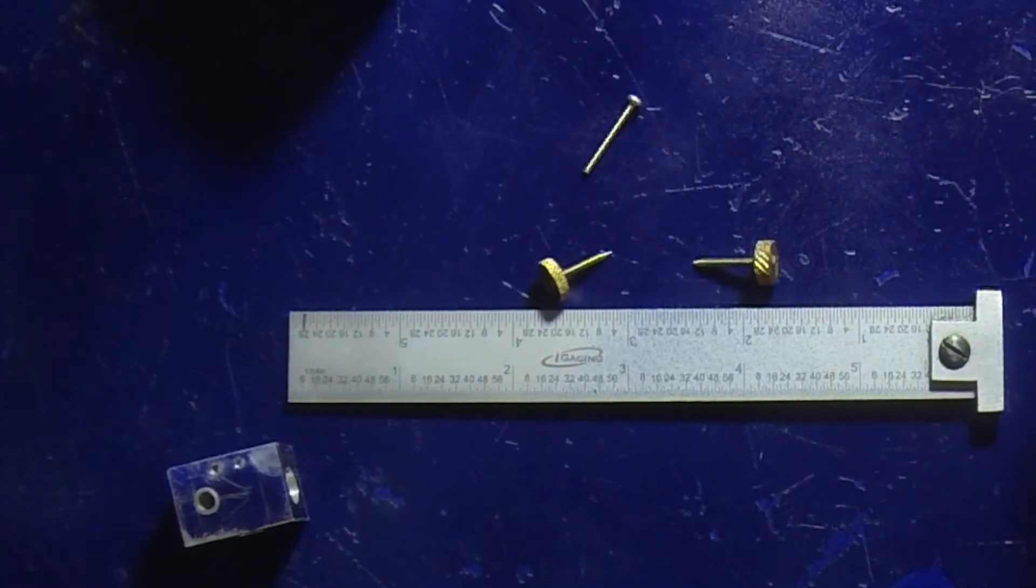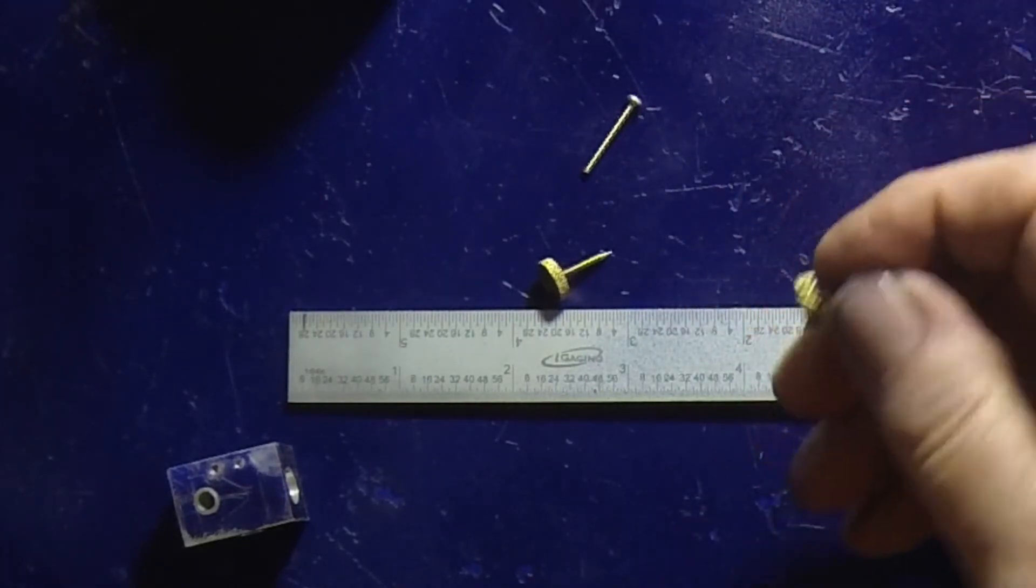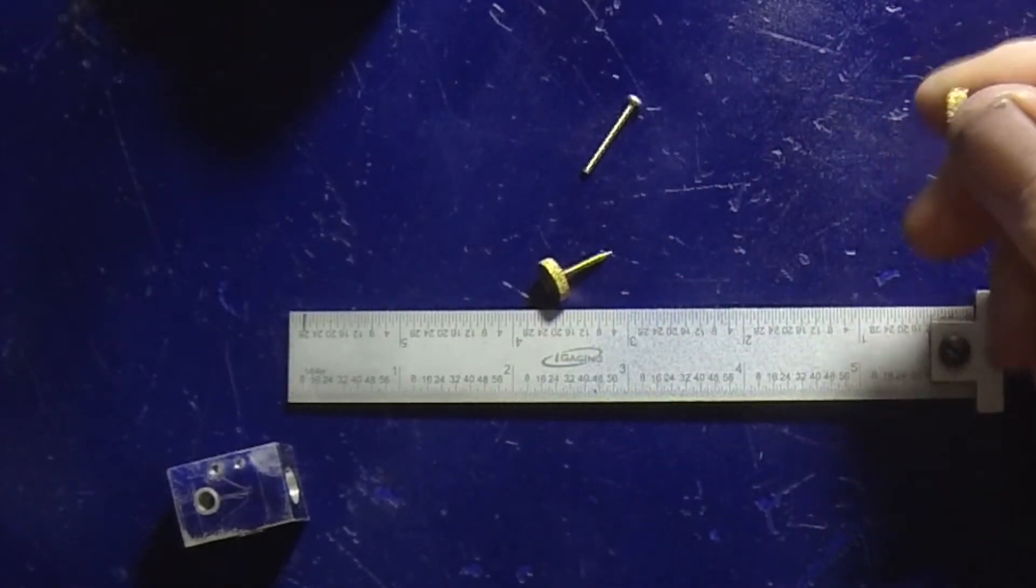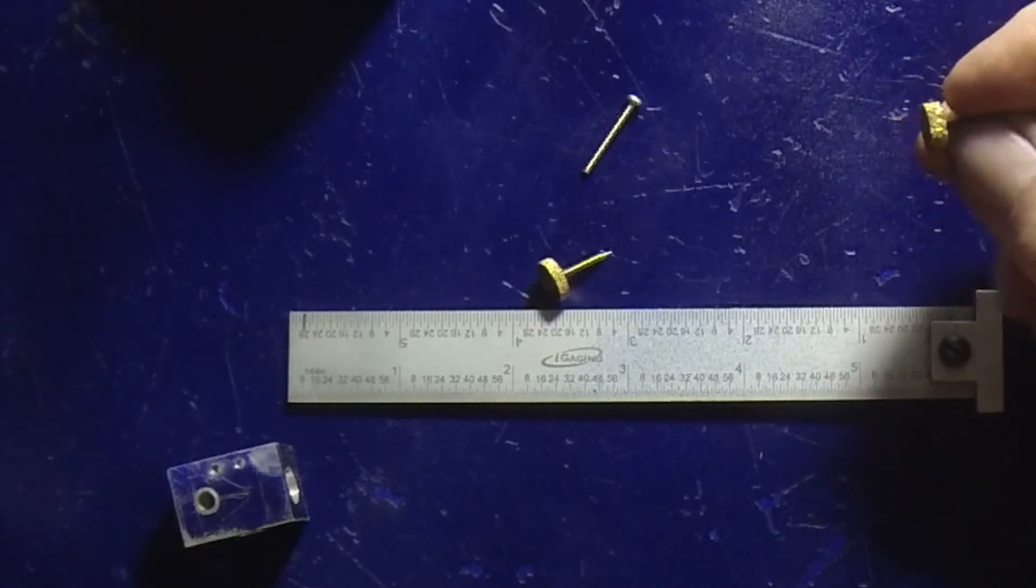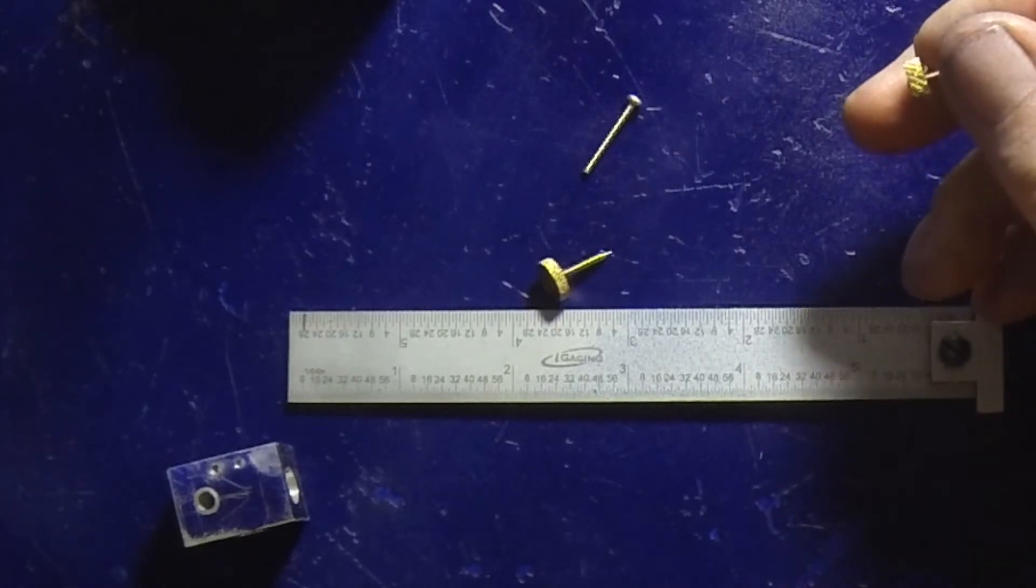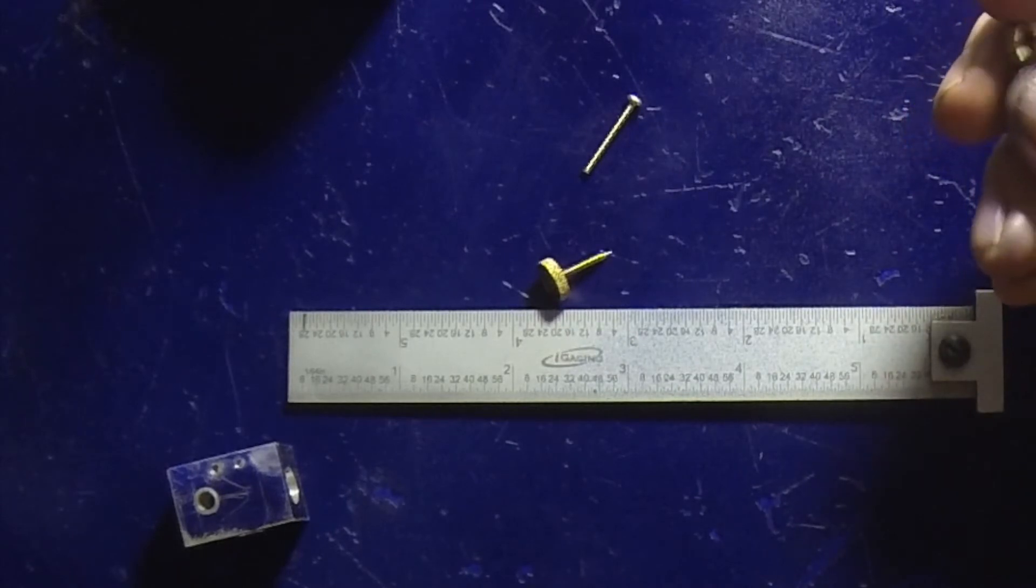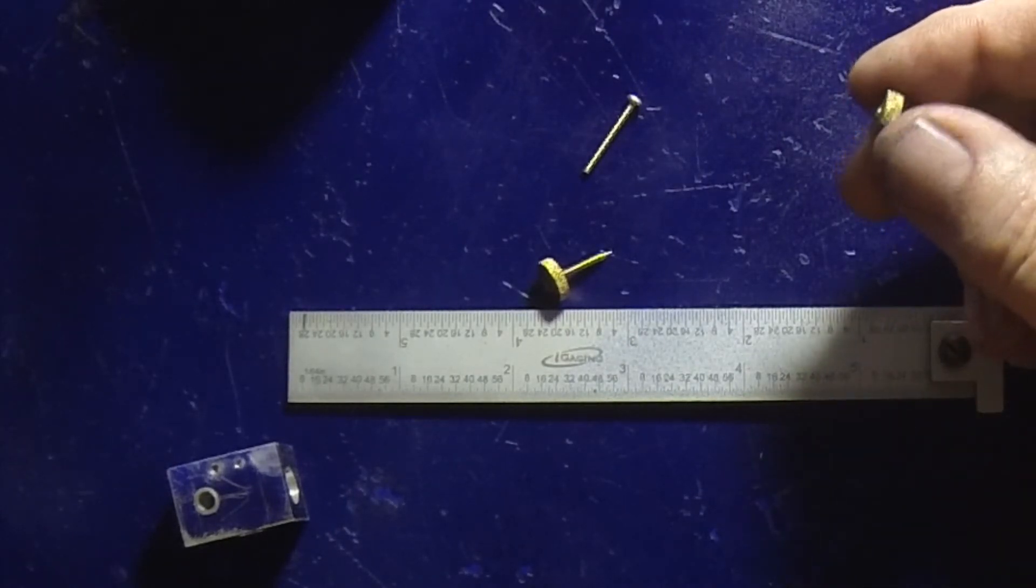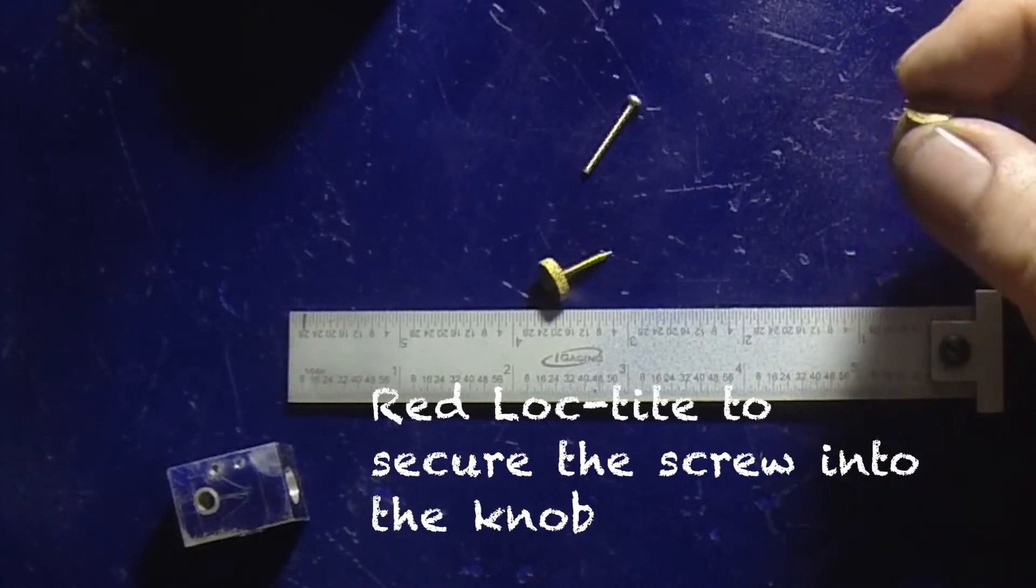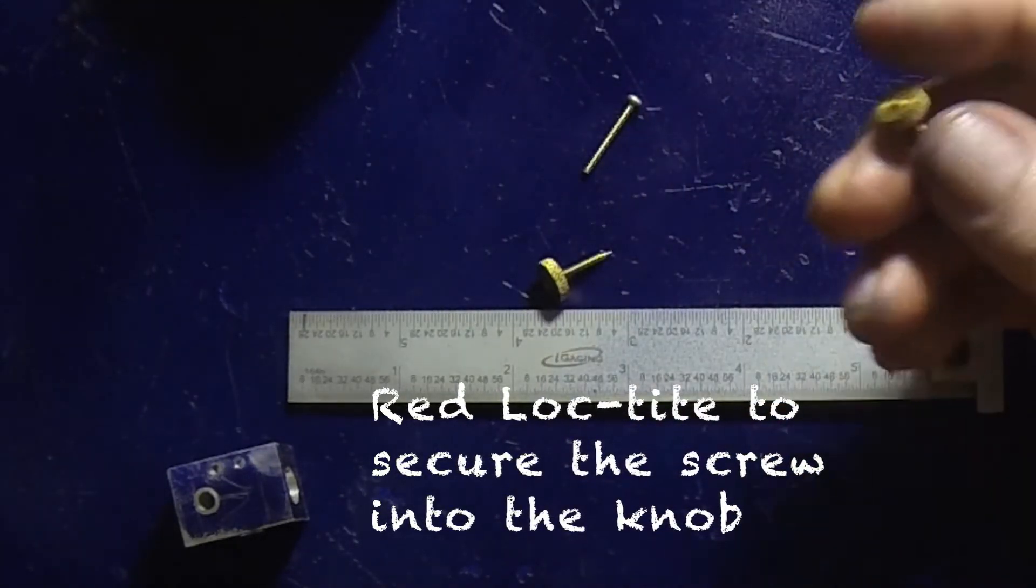First of all, I took some three-eighths inch brass rod and knurled it, and I sliced off these little knob handles. It was of course drilled, then I hand tapped them to 2-56, which is the smallest I've ever done anything, but that's how I did the knob portion.